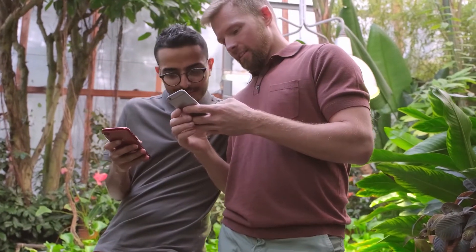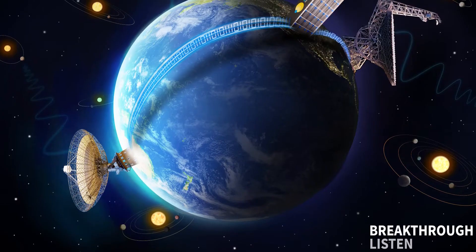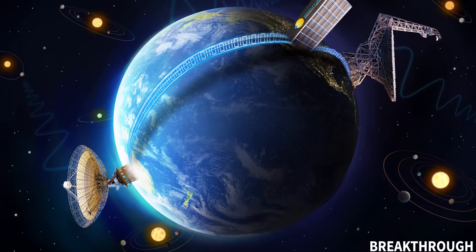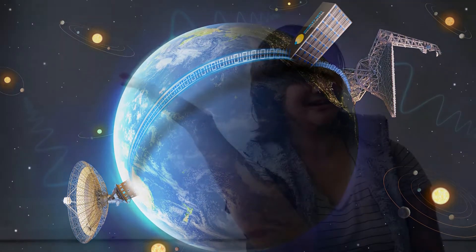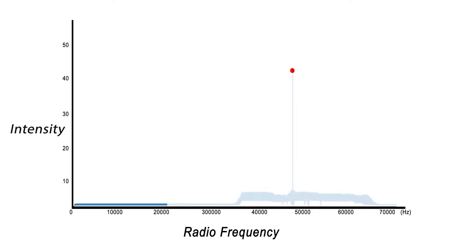We're looking for a wider range of drift rates, which basically is just the slope of the line that we're searching for. We're searching to higher slopes which means higher accelerations than we have in the past for this project. We're looking for these really narrow signals maybe not drifting or maybe drifting a lot in frequency over the course of the observation.